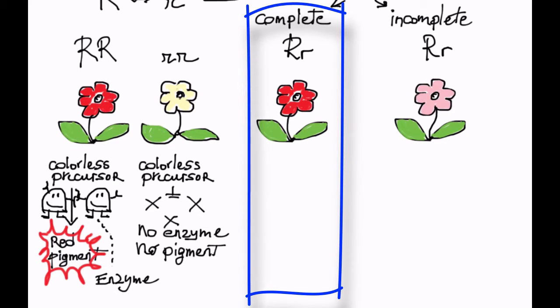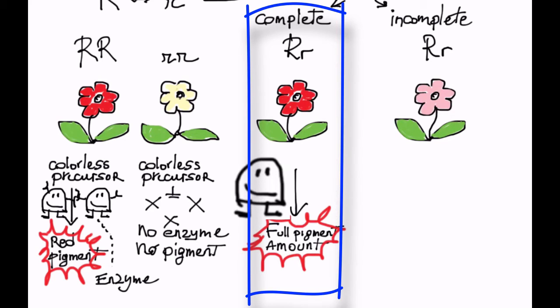In the heterozygote that displays complete dominance, the large R allele specifies the production of active enzyme and either of the following scenarios applies: the big R allele manages to make more enzyme, that is to compensate for the inactive one, or the enzyme is intrinsically so active that it can carry out the work of two enzyme doses without a reduction in pigment amount.